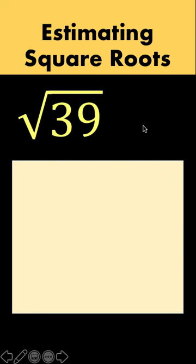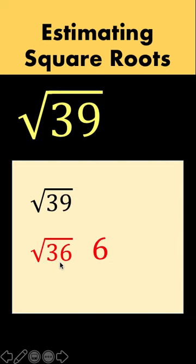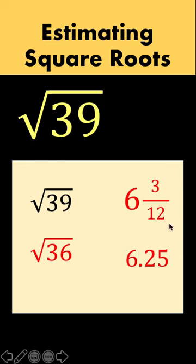Let's have another example. Let's say we have square root of 39. Again, we look for a perfect square lesser than 39. And that is 36. The square root of 36 is 6. And then subtract 39 minus 36 to get 3. And then double this 6 to get 12. 3 over 12 is 1 fourth. So we have 6.25.